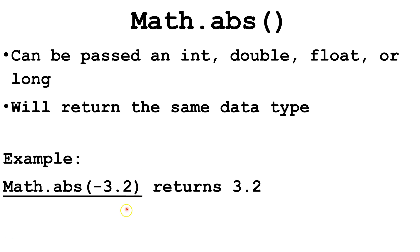For example, if we send it the double negative 3.2 in these parentheses, it will return the double positive 3.2.